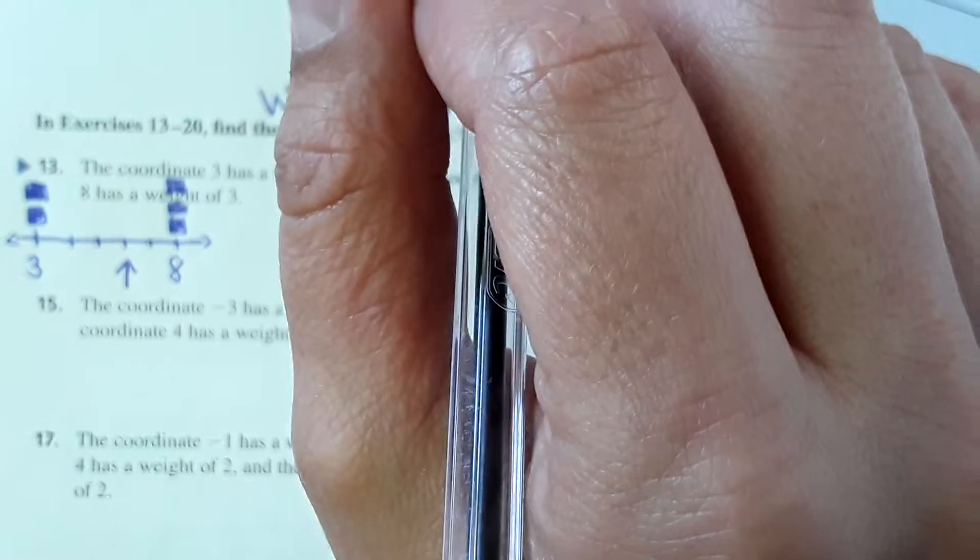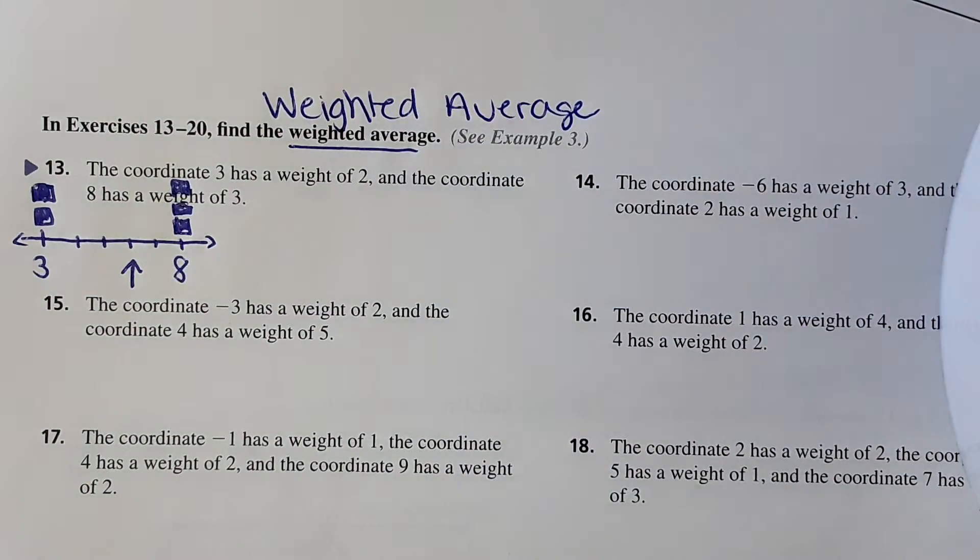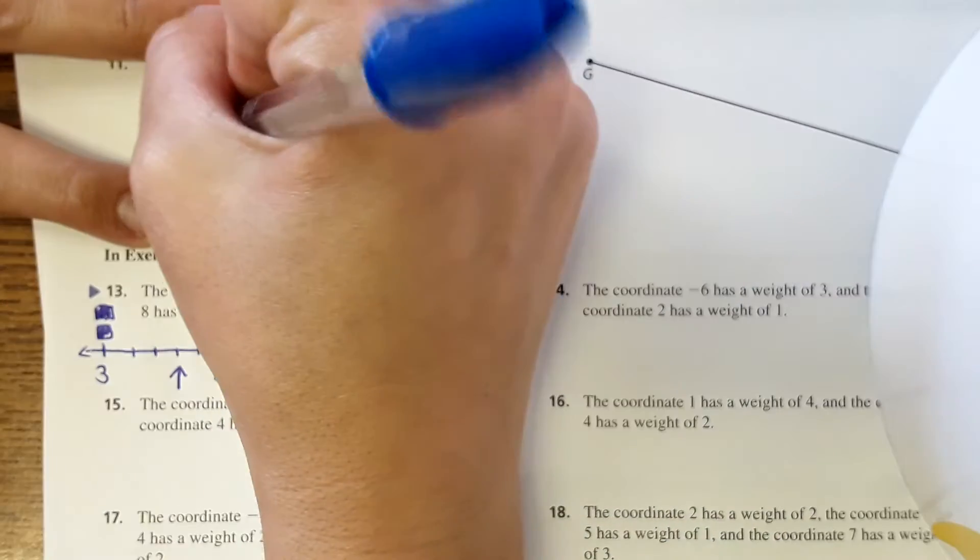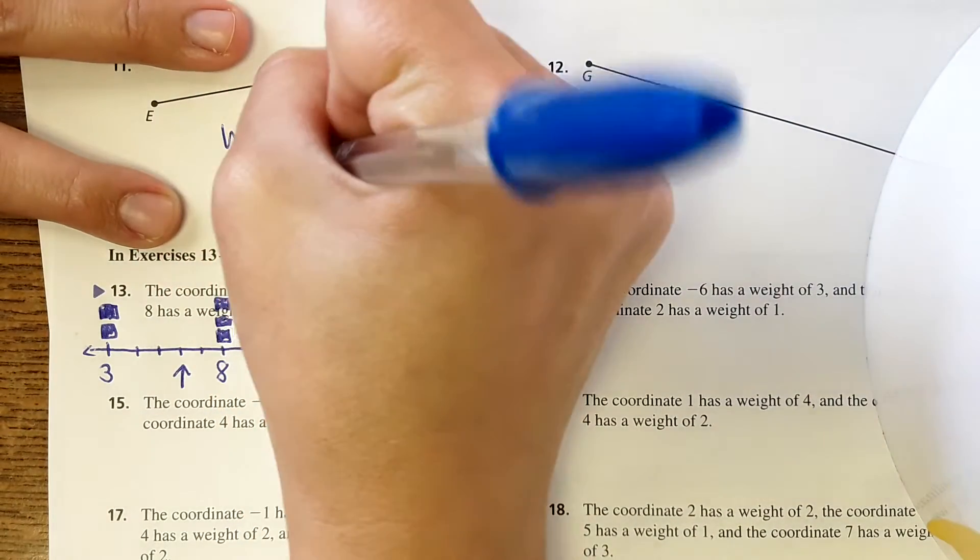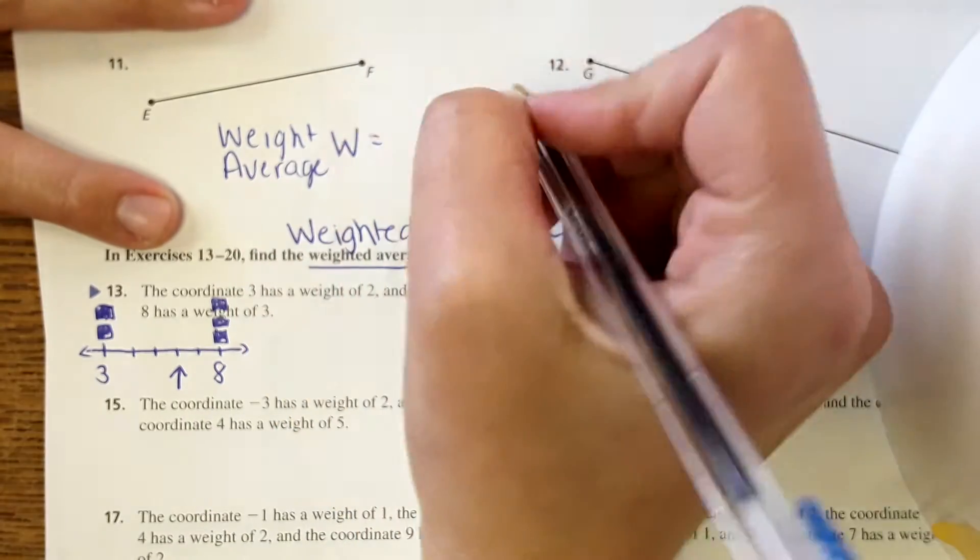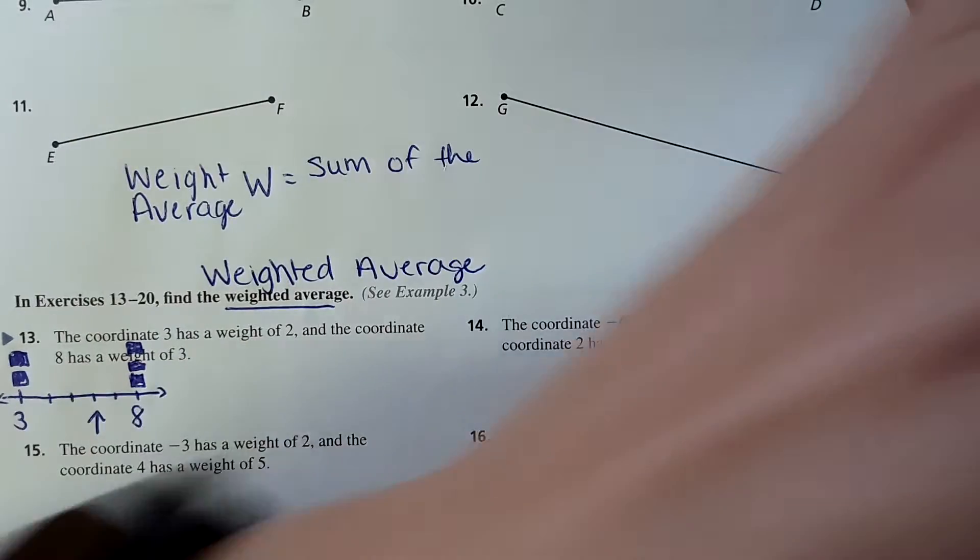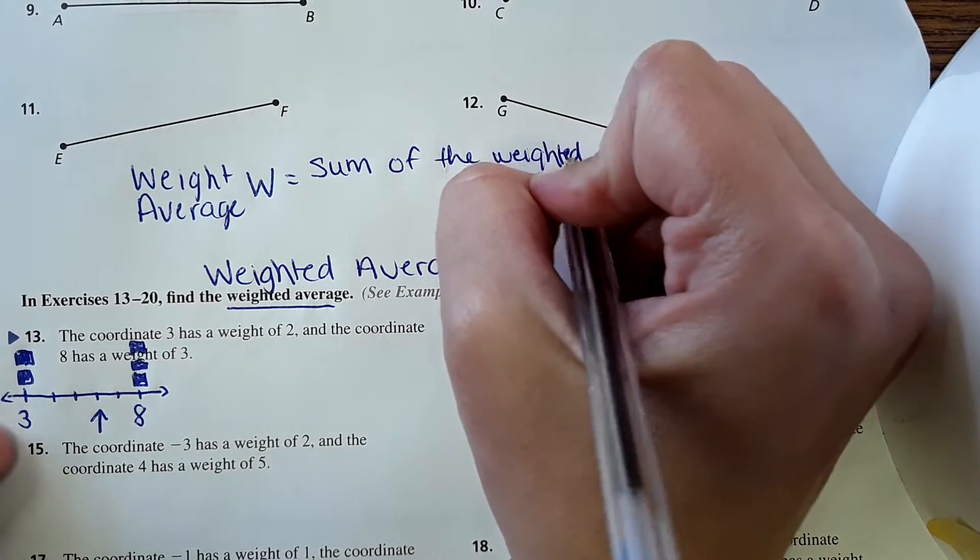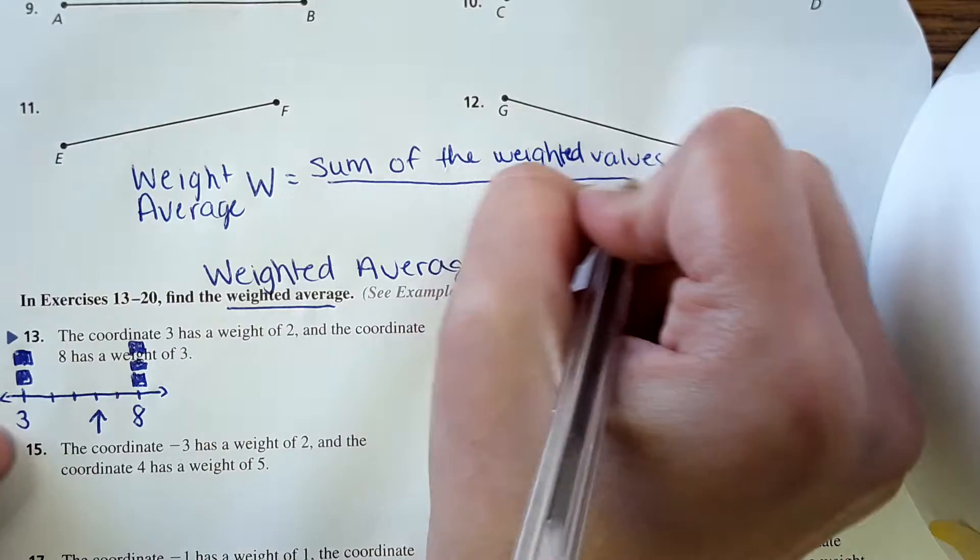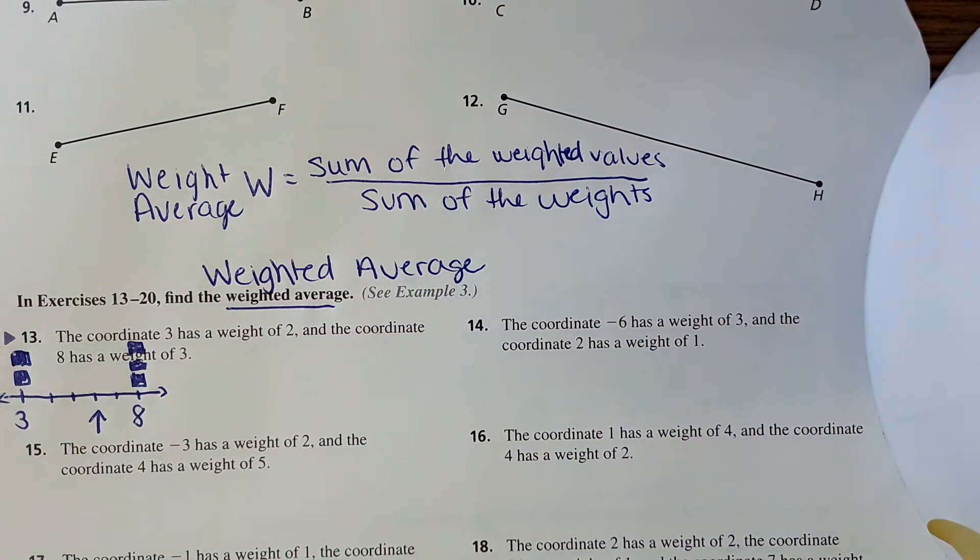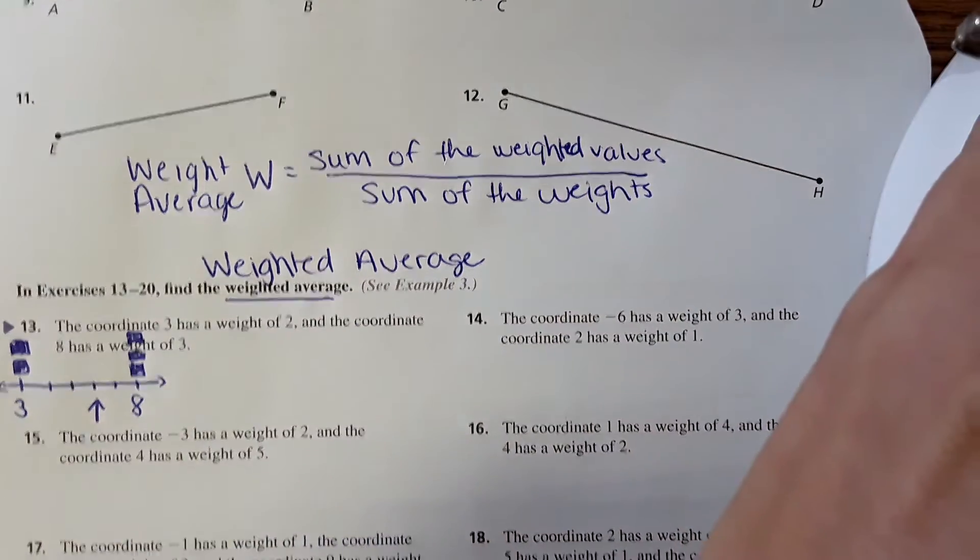Some of you might be able to just see it or that just makes sense. Some of you might be like, just give me a way to do it. There is an equation. So here is the equation. The equation is weighted average, which is W equals sum of the weighted values over sum of the weights. And now you're probably thinking, what do they mean sum of the weighted values? Which is what I want you to be thinking.